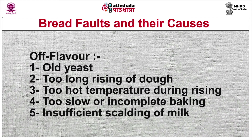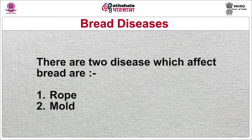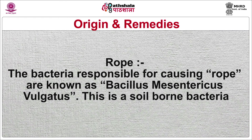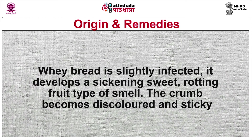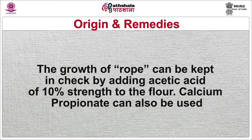Now I will discuss bread diseases. There are two diseases which affect bread: rope and mold. The bacteria responsible for causing rope are known as Bacillus mesentericus vulgatus. This is a soil-borne bacteria. Since the crease and beard of wheat contain some amount of dust, these are generally the areas that harbor bacteria where it gets transferred to the flour. When bread is slightly infected it develops a sickening sweet rotting-fruit type of smell. The crumb becomes discolored and sticky. The growth of rope can be kept in check by adding acetic acid of 10 percent strength to the flour; calcium propionate can also be used.